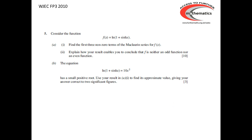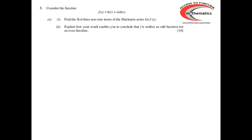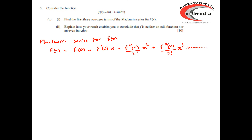The second example comes from the 2010 paper. We have the function f(x) = ln(1 + sinh x), and we need to find the first three non-zero terms of the Maclaurin series for f(x). The Maclaurin series for a function is f(0) plus f'(0) times x plus f''(0) over 2 factorial times x squared plus f'''(0) over 3 factorial times x cubed, and so on.